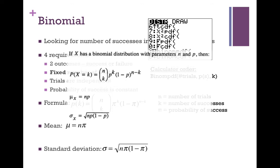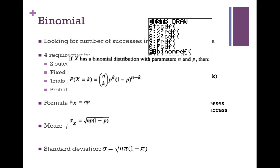One thing to note: these binomial formulas are on the formula sheet for the AP test. The only difference on the AP formula sheet is that instead of π, it uses p. You need to be able to write the formula, but then use your calculator to compute it.